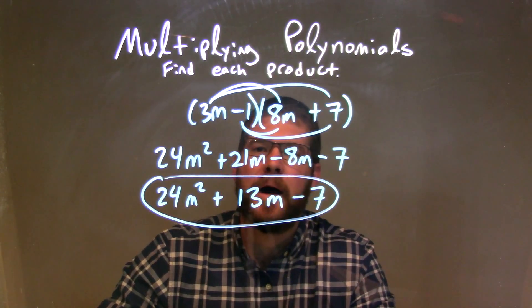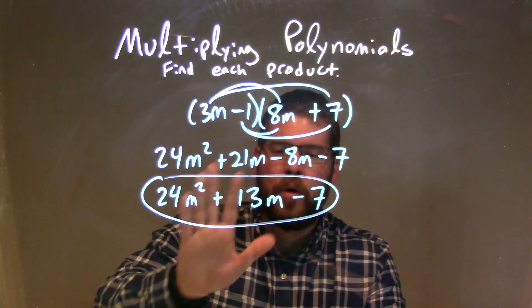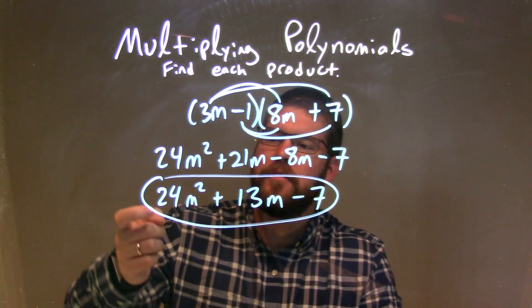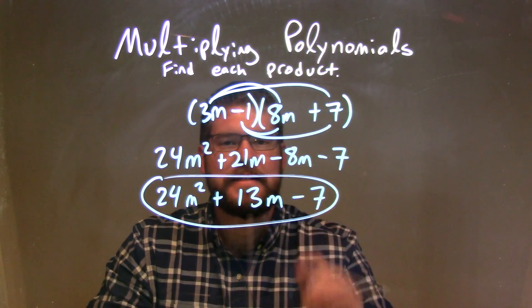Then from there, we combine our like terms, 21m minus 8m. There are only two like terms. I combine to be 13m. And so our final answer here is 24m squared plus 13m minus 7.